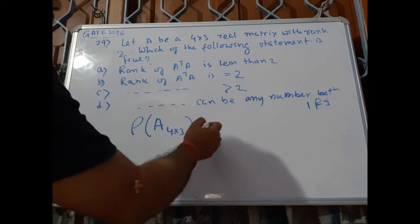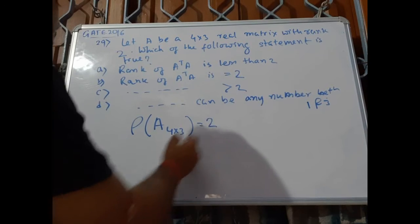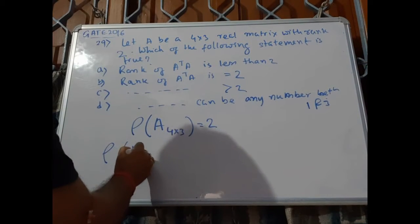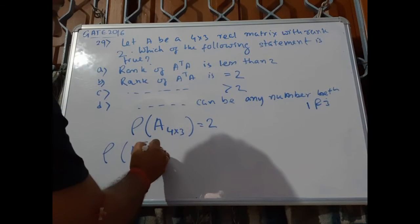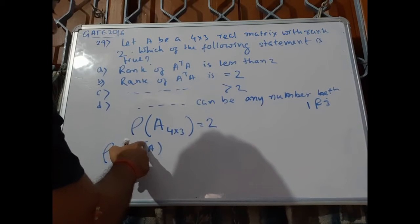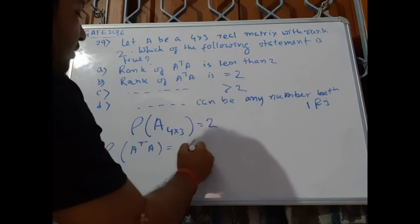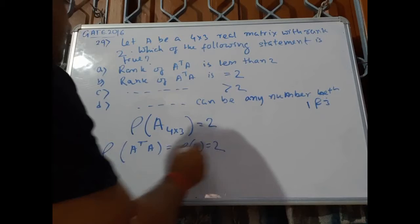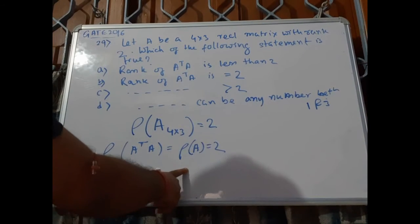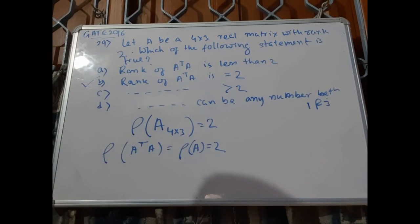Given a 4×3 matrix with rank 2, we know that rank of A transpose A equals rank of A, so this is equal to 2. This is a standard property, so the correct option is option B.